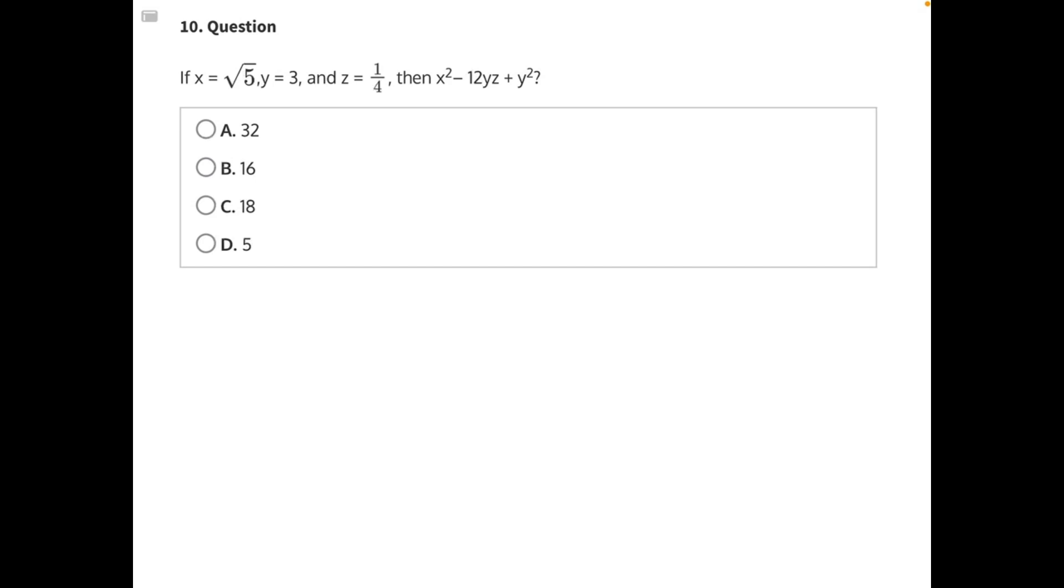If x is equal to the square root of 5, y is equal to 3, and z is equal to 1/4, then what is x squared minus 12yz plus y squared?